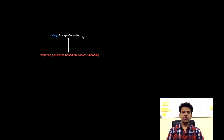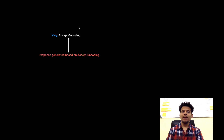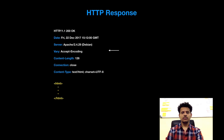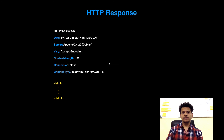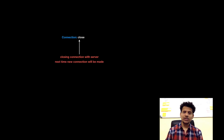Next is the Accept-Encoding header. As we saw in the last video, the encoding information was sent by the browser, and this response is generated based on that Accept-Encoding. Next is the content-length, which is the message body length in bytes. Next is connection close, which means we are closing this connection and for any new request a new connection will be made.